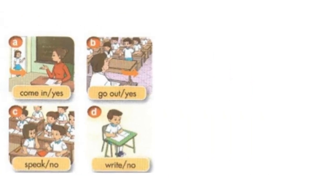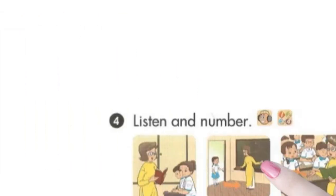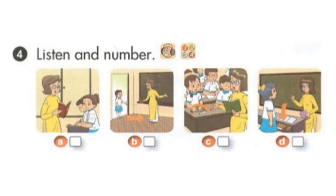Page 43. Lesson 2. Activity 4. Listen and number. 1. May I come in? Yes, you can. 2. May I open the book? Yes, you can. 3. May I sit down? No, you can't.